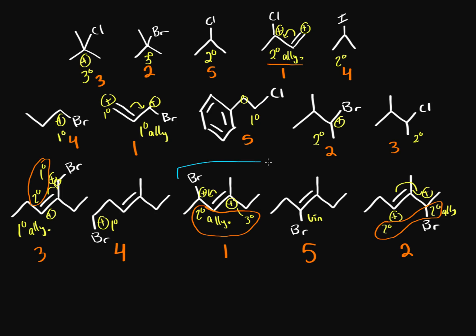Both of those secondary allylic molecules start off on a secondary carbon, so they might look the same at first. But once you draw the resonance form, you'll notice one has a tertiary form and the other only has a secondary form. To reiterate: first consider leaving groups and basic resonance stability. If you have resonance, the cation is more stable; bigger leaving groups like bromine or iodine increase SN1 reactivity. And when comparing allylic cations, look at whether the other resonance form is more or less substituted.